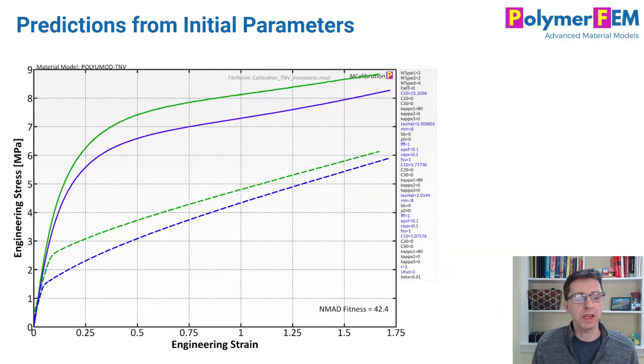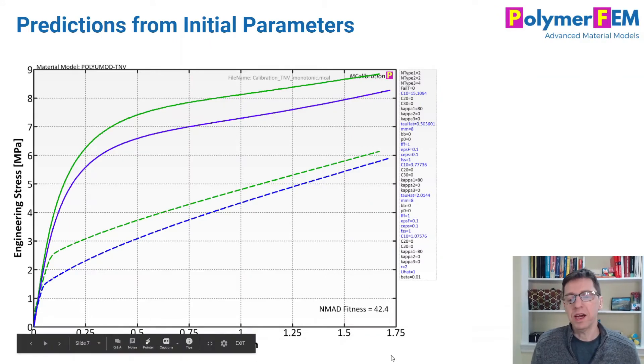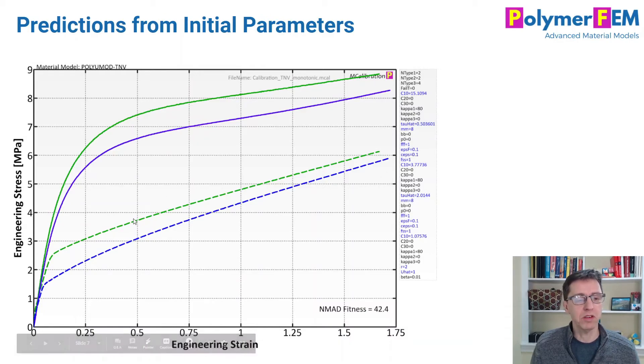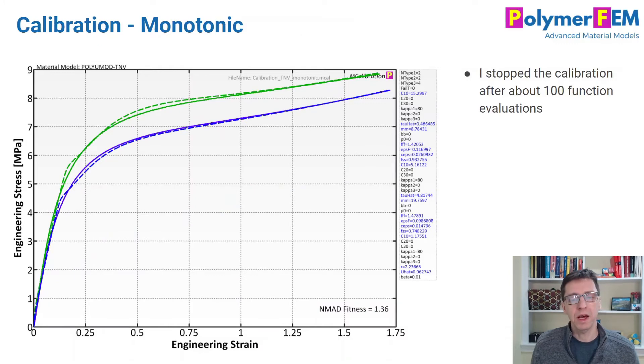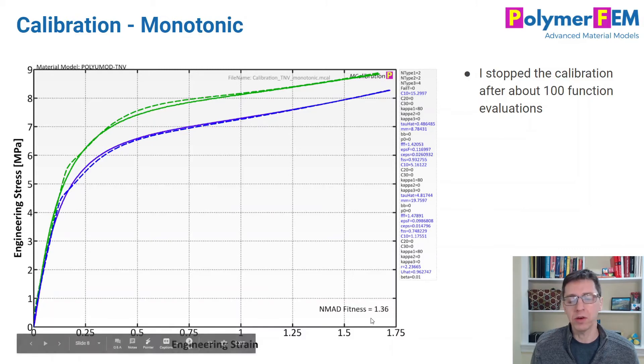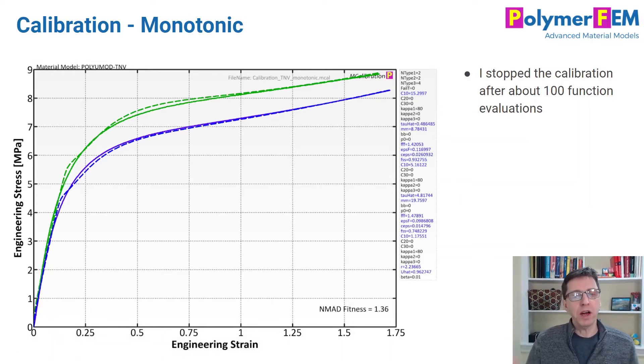Let's look at the results. Calibration one, I have monotonic data. This is the starting point using MCalibration. In all these cases, I use the same initial guess of the parameters - not a particularly great guess, but a reasonable guess. If I run this and calibrate to this data set, this is the data I get. It looks pretty good. The dashed lines are in good agreement with the solid lines. The error is 1.36%. I stopped this calibration after about 100 function evaluations and just let it run for about a minute.